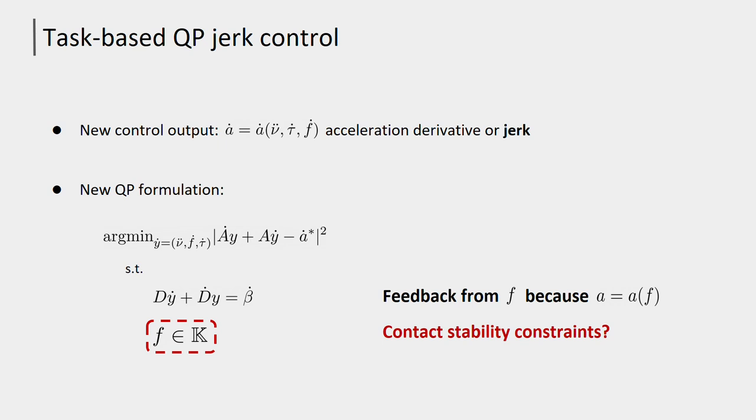Differently from classical QP-based controllers, in the jerk formulation the search variable is composed of the contact wrench derivative. So the problem is, how can we guarantee with this new formulation that the contact stability constraints are respected?